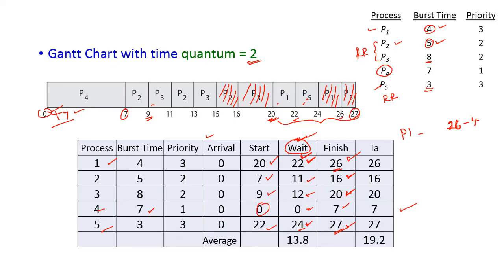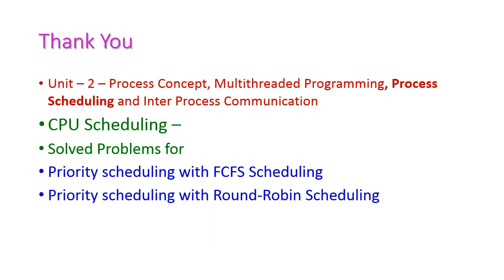The average waiting time is 13.8 for all the processes. For the average turnaround time, since arrival time is 0 for all processes, turnaround time equals finish time minus arrival time, so finish time equals turnaround time here. The average turnaround time for all the processes is 19.2. We have seen the priority scheduling algorithm with first come first serve scheduling and with round robin scheduling — the same problem solved using two different scheduling methodologies. I hope this class will be very useful to you. In the next class, we will see another important topic from the second unit. Thank you.